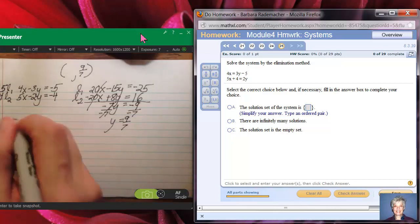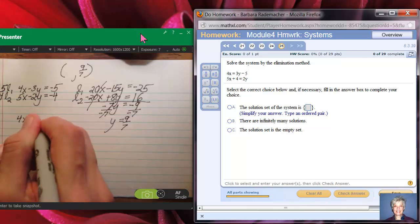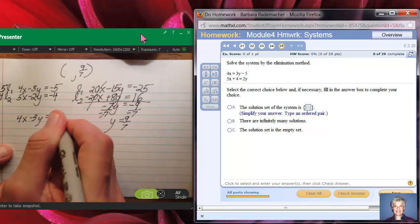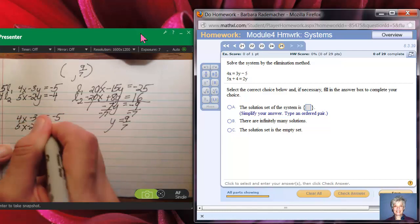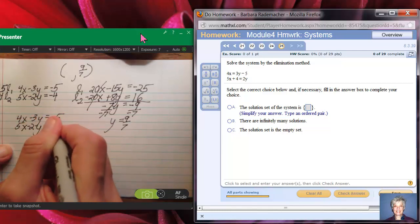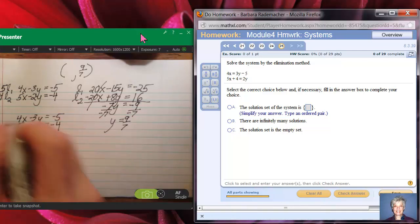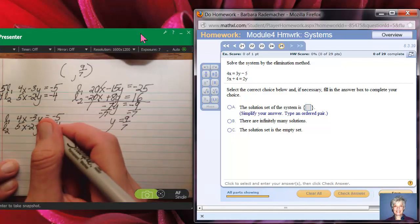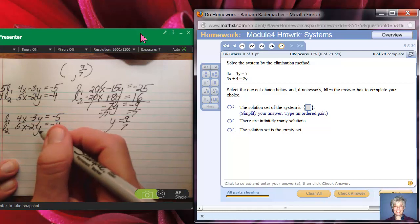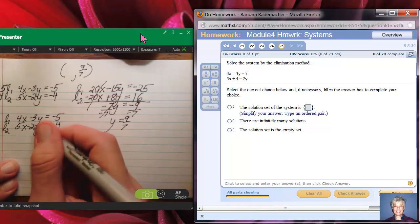The original system was 4x minus 3y equals negative 5, and 5x minus 2y equals negative 4. Here's line 1, here's line 2. Now, I have to figure out how I could make, if I added these two lines together, how I could make my y terms also cancel out, turn to zero when you add them.